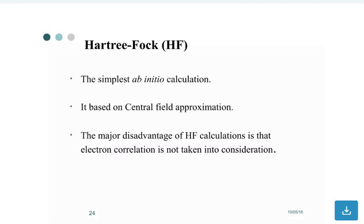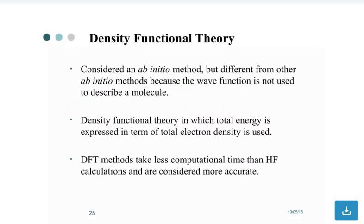Different levels of ab initio calculation: Hartree-Fock and Density Functional Theory. What is Hartree-Fock? The simplest ab initio calculation. It is based on central field approximation. The major disadvantage of Hartree-Fock calculation is that electron correlation is not taken into consideration.